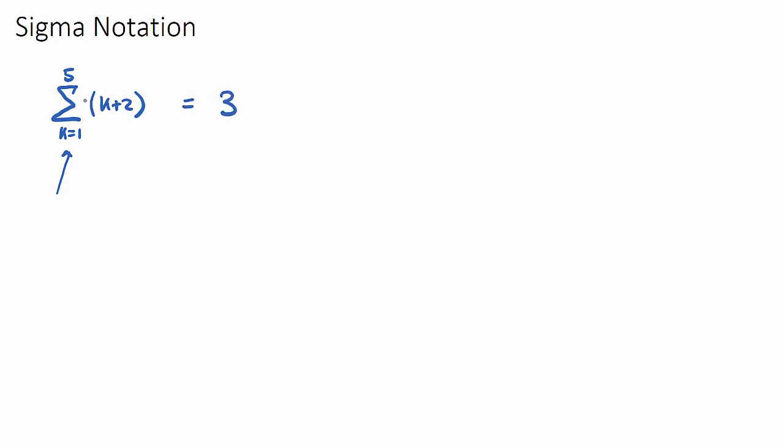Now what we then have to do is we need to sum, so 3 plus, and we need to go up to the next k value which would be 2. You go up by all of the integers. So you go to k equals 2. So if k did equal 2, you'd sub the 2 in. 2 plus 2 is 4, so 4 will be our term.